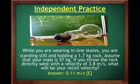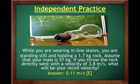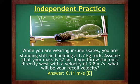One more example: while wearing inline skates, you are standing still holding a 1.7 kg rock. Your mass is 57 kg. You throw the rock directly west at 3.8 m/s. What will be your recoil velocity? Since the rock goes west and the system starts at rest, we already know you'll move east — the question is just with what speed.